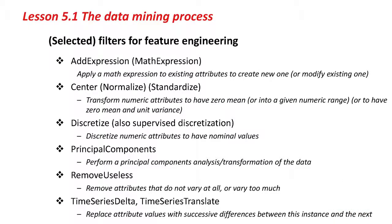The key technical part of all this is feature engineering, and Weka has got a lot of features to help with this. It might be worthwhile defining a new attribute that's a mathematical expression involving existing attributes, or modifying an existing attribute. With "add expression," you can use any mathematical formula to create a new attribute from existing ones. You might want to normalize, center, or standardize your data — transforming a numeric attribute to have zero mean is "center"; transforming it into a given numeric range is "normalize"; and giving it zero mean and unit variance is "standardize." You might also want to discretize numeric attributes into nominal values, and Weka has both supervised and unsupervised attribute discretization filters.